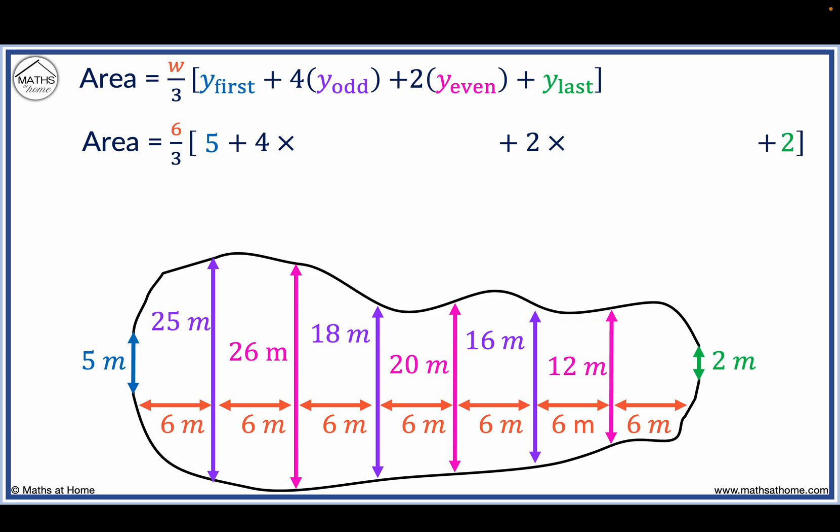The odd measurements are the values 25, 18, and 16. We add these together inside brackets and the sum will be multiplied by 4.